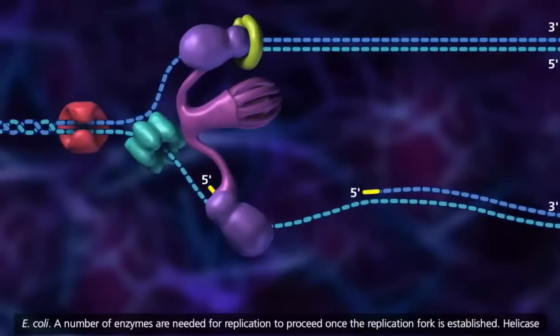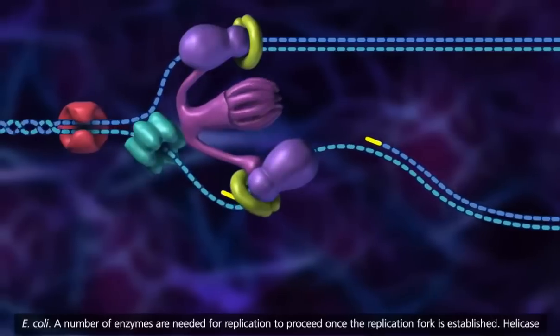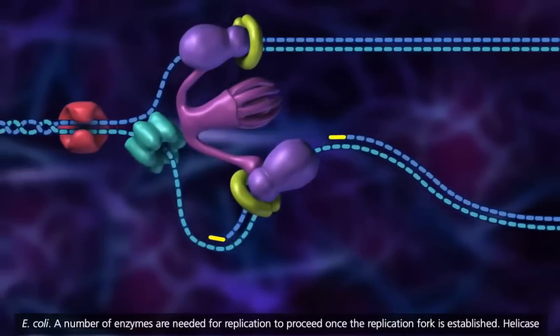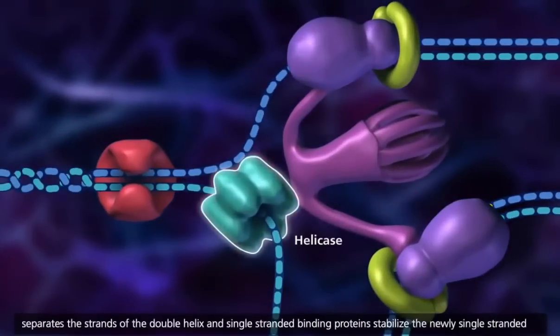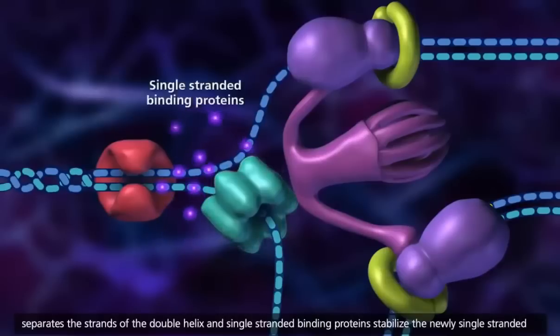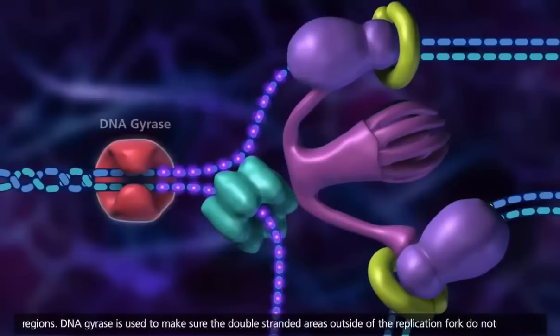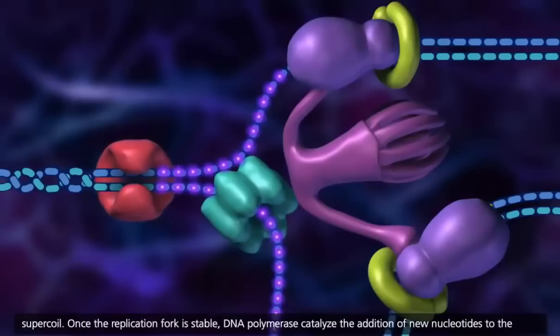A number of enzymes are needed for replication to proceed once the replication fork is established. Helicase separates the strands of the double helix, and single-stranded binding proteins stabilize the newly single-stranded regions. DNA gyrase is used to make sure the double-stranded areas outside of the replication fork do not supercoil.